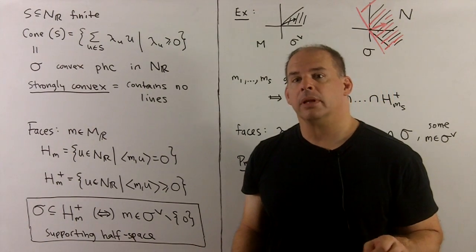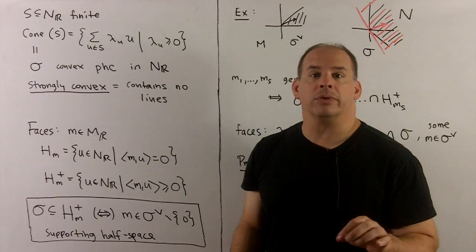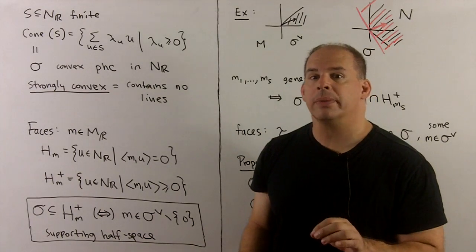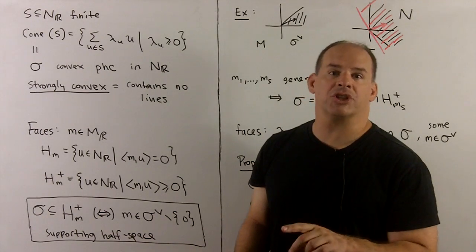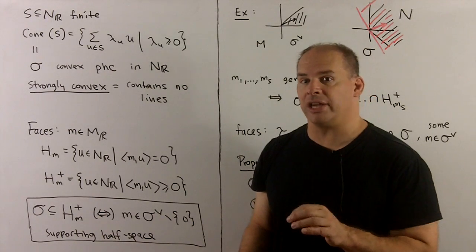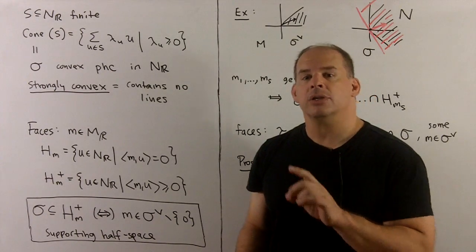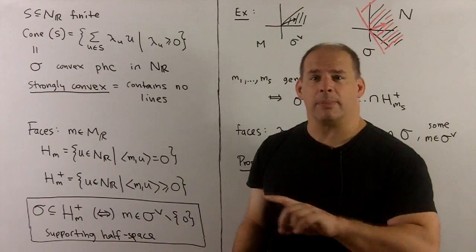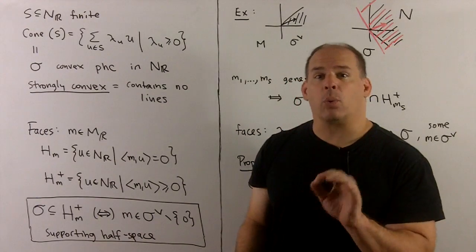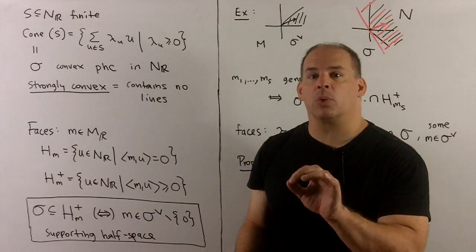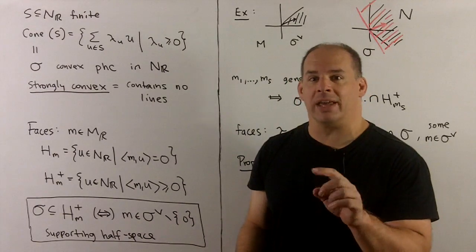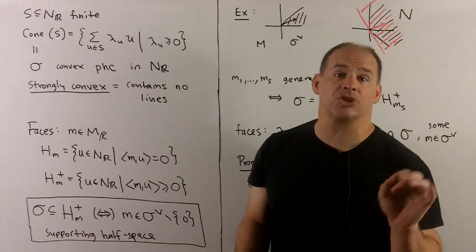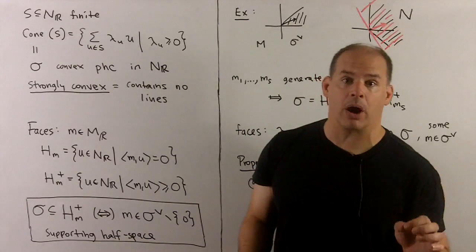For this section, we give an overview of faces in polyhedral cones and note the connection to localization. Here we'll see some of the reasoning for why it's better to work with cones in N_R rather than starting in M_R.